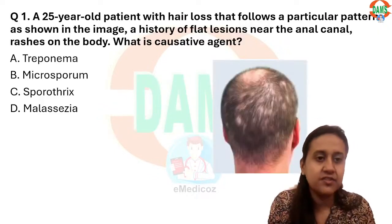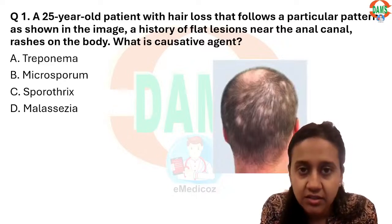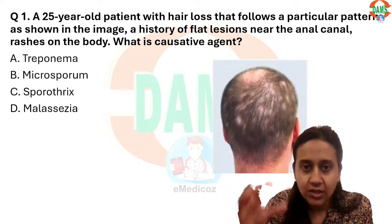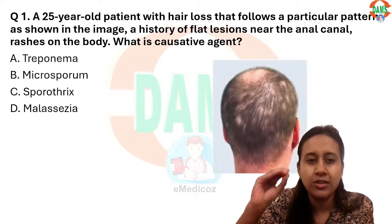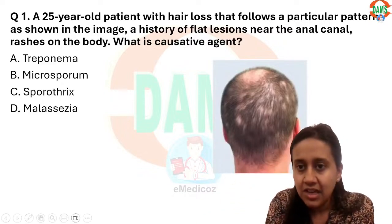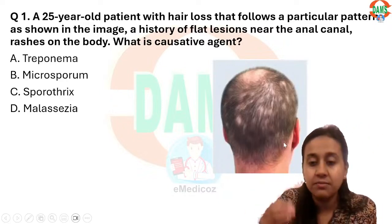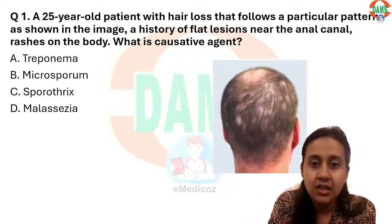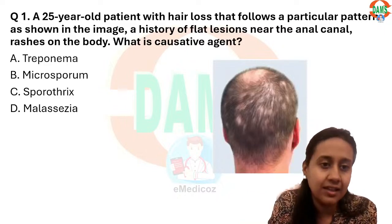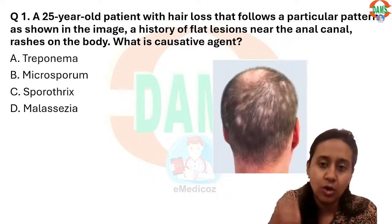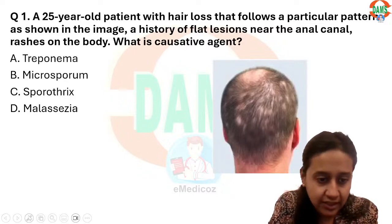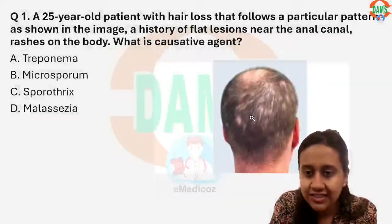The first question: a 25-year-old patient with hair loss following a particular pattern. You can see in this image a moth-eaten type of alopecia. Few students told me that the question mentioned moth-eaten type of alopecia, and there is a history of flat lesion on the anal area as well as rash on the body. What is the causative agent? This type of moth-eaten alopecia is very characteristic of syphilis.